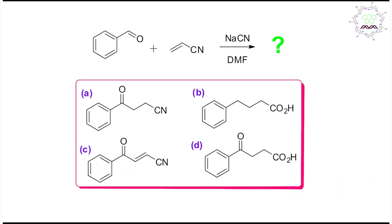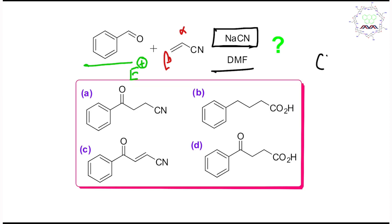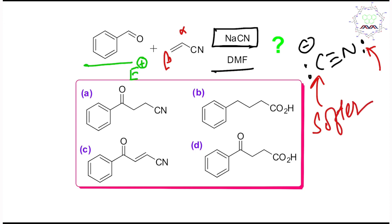As usual, I first request students to look at the reagents carefully. This is actually an aldehyde, and aldehydes are very good electrophiles in nature because they are less bulky and more active. Second, this is also an alpha-beta unsaturated nitrile — you may consider this a Michael acceptor. Sodium cyanide is acting as nucleophile and DMF is acting as solvent. The cyanide is actually an ambident nucleophile, meaning it can act as nucleophile from both nitrogen or carbon.